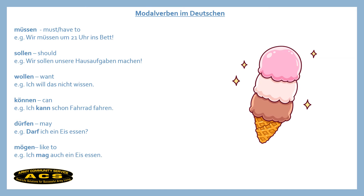Wollen means 'want': Ich will das nicht wissen — I don't want to know that. Können means 'can,' which is where we express ability or skill: Ich kann schon Fahrrad fahren — I can already ride my bike. Dürfen means 'may,' so it's for asking permission: Darf ich ein Eis essen? — May I eat an ice cream?